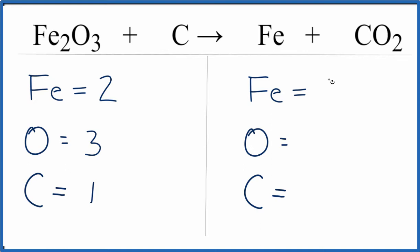Over on the product side, we have one iron, we have two oxygens, and then we have the one carbon. So I look at it, I see that I have two irons here, one here. I could just put a two to fix the Fe,